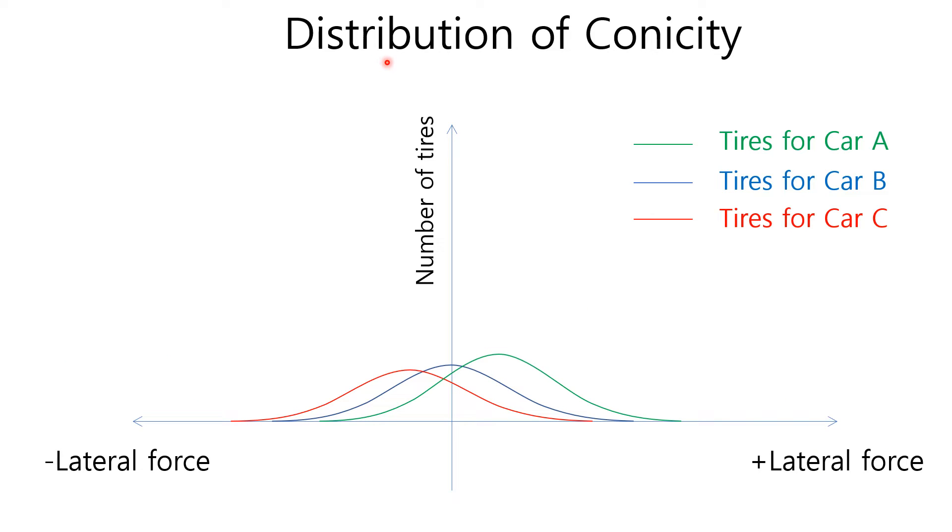This graph shows the typical distribution per conicity. A vertical axis shows number of tires, and the horizontal axis shows lateral force. This direction is plus lateral value, and this direction is minus force value.